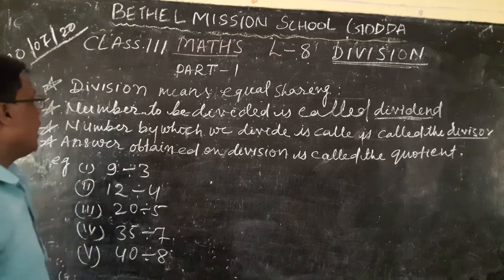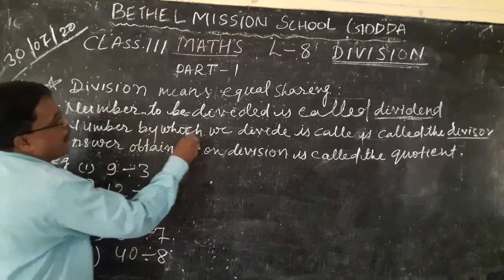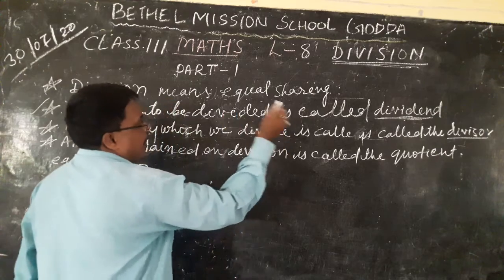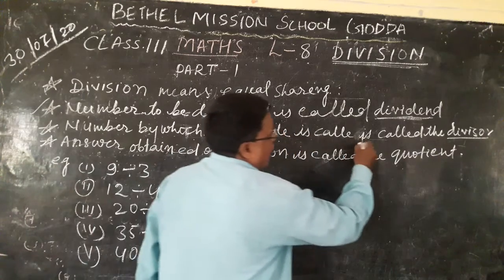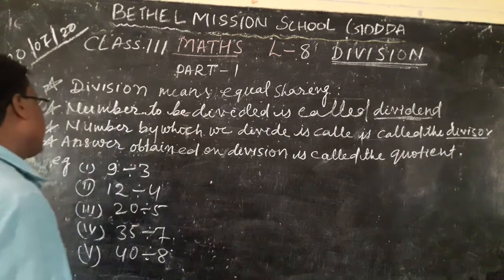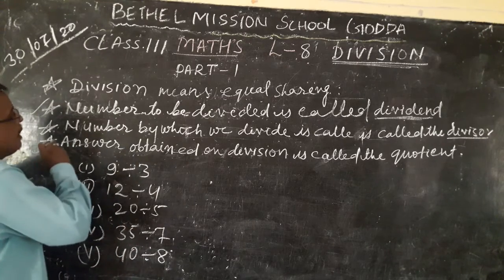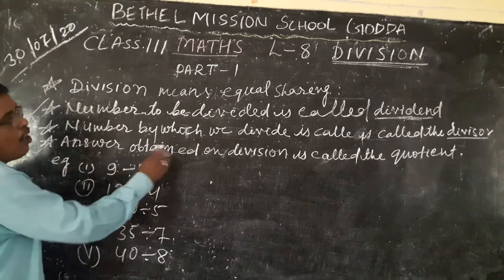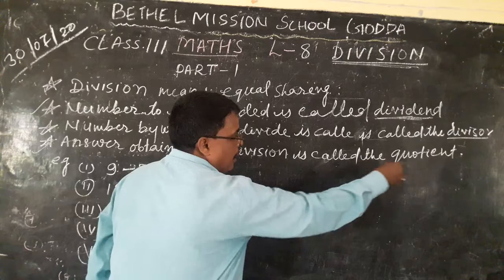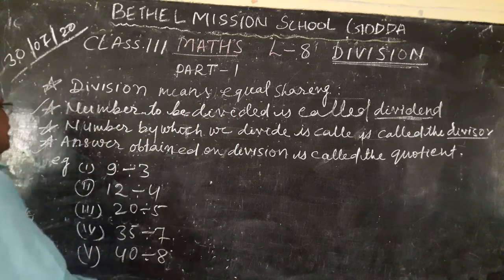And next, the number by which we divide is called the divisor. And last, the answer of division is called the quotient. See here, suppose we take one example.